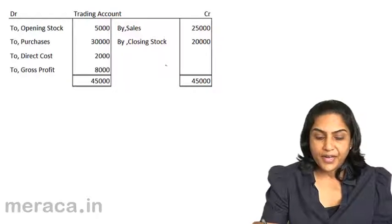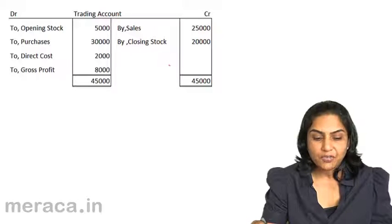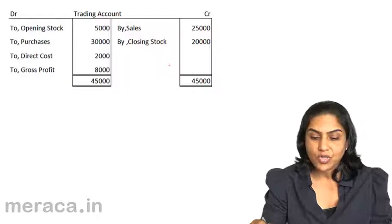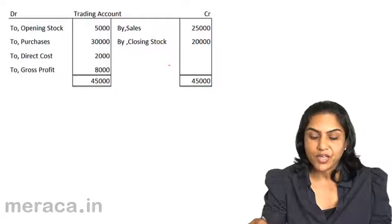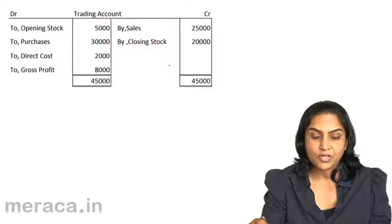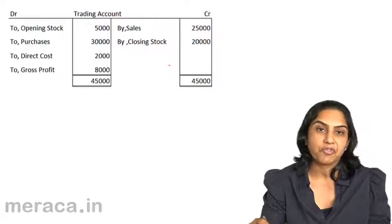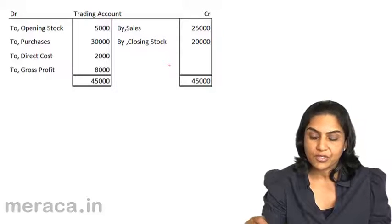Here we have a trading account where we have an opening stock of 5,000, purchases of 30,000, direct cost 2,000, sales of 25,000, closing stock 20,000, giving us a gross profit of 8,000.